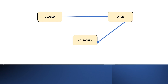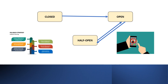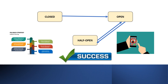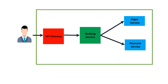After a certain period, the circuit breaker transitions to a half-open state. In this state, it gradually starts accepting requests to the booking service to test whether the service has recovered. If the requests are still failing, the circuit breaker reverts back to the open state, blocking calls and executing fallback logic. However, if the requests are successful, indicating that the booking service is operational again, the circuit breaker switches back to the closed state, allowing normal communication to resume. We will implement the circuit breaker in the API gateway as well as in the booking service.